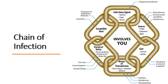Certain conditions must be met for an infectious disease to spread from person to person. This process is known as the chain of infection, defined as a process that begins when the agent leaves the host through a portal of exit, is conveyed by a mode of transmission, and enters through an appropriate portal of entry to infect a susceptible host. There are six steps in the chain of infection, and transmission will only take place if all six links are intact.